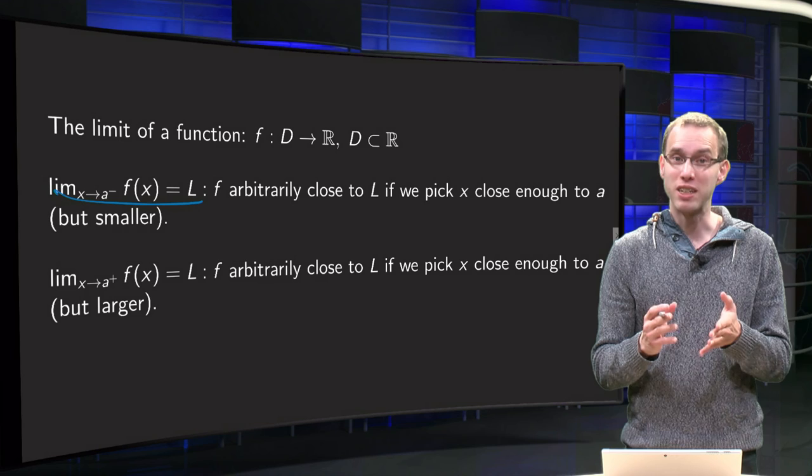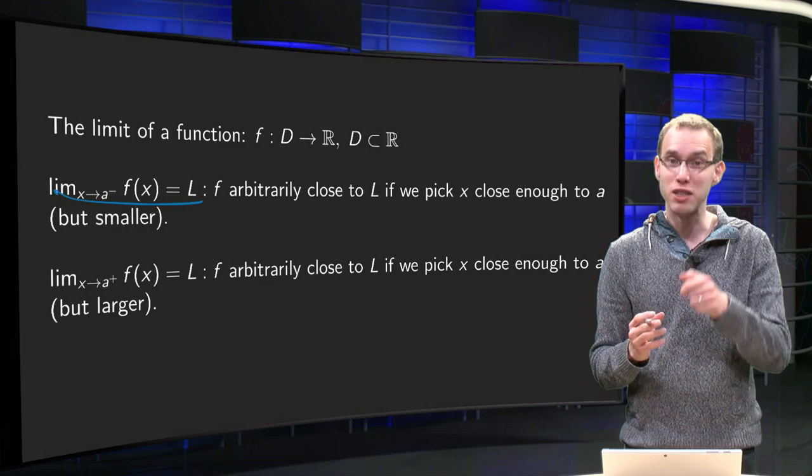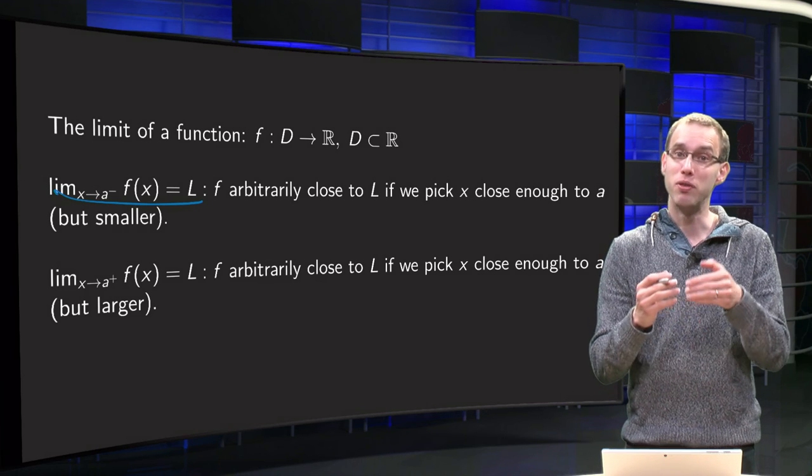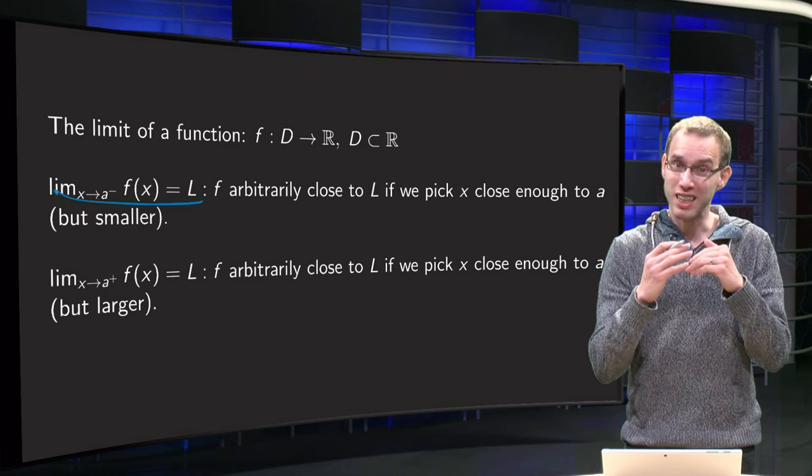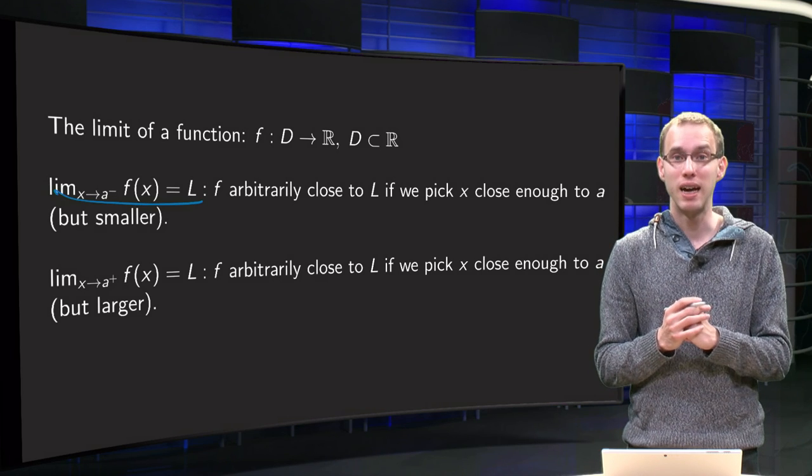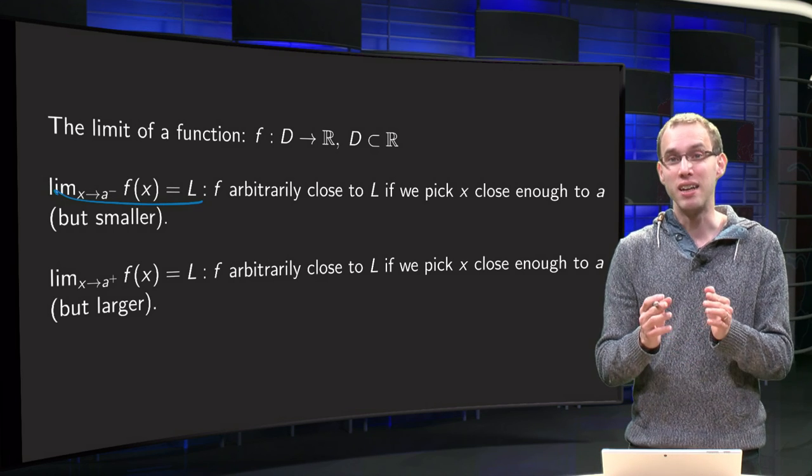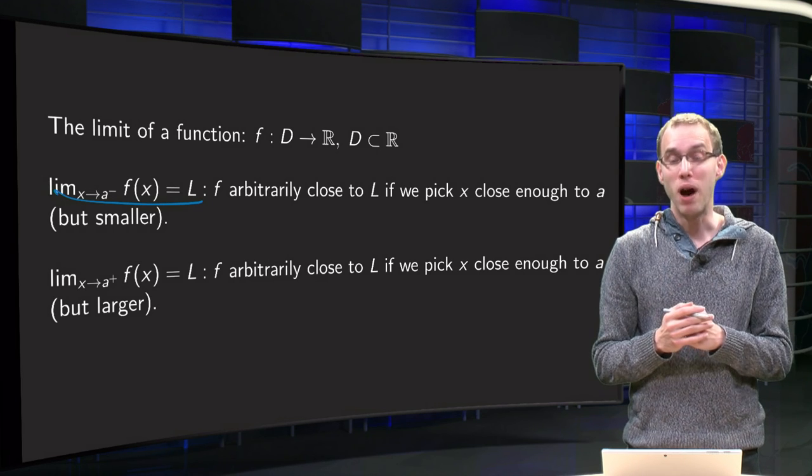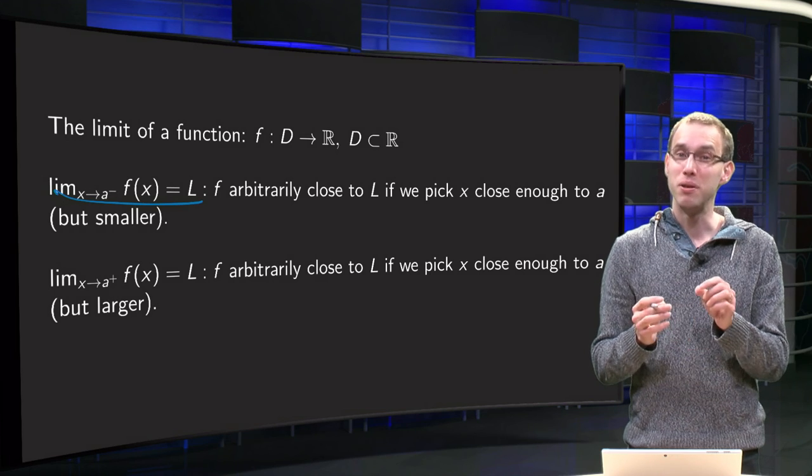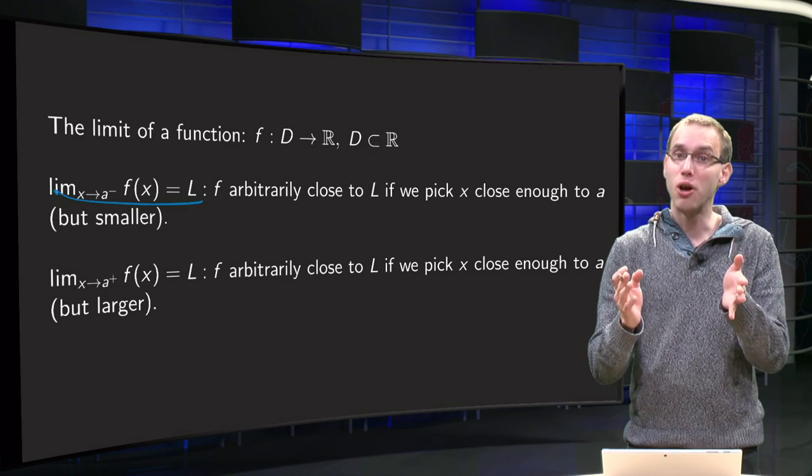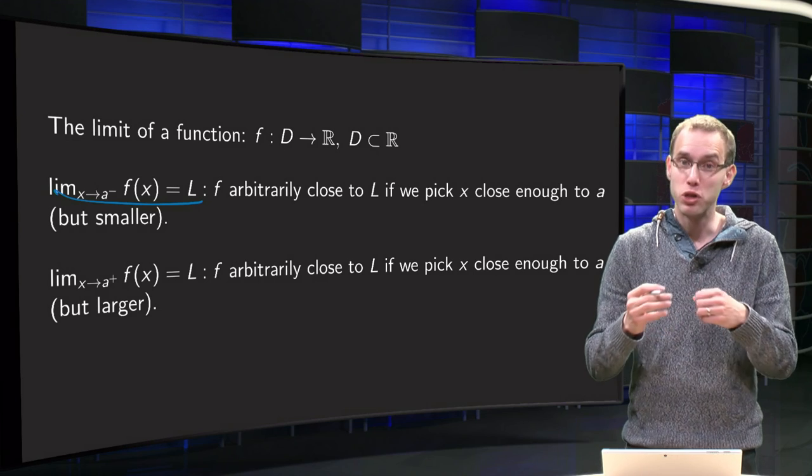A limit from x approaching a, with a minus, means we approach a where we are with our x's below a. If this equals L, that means that we can get arbitrarily close to this y value L if we pick x close enough to a, but smaller.